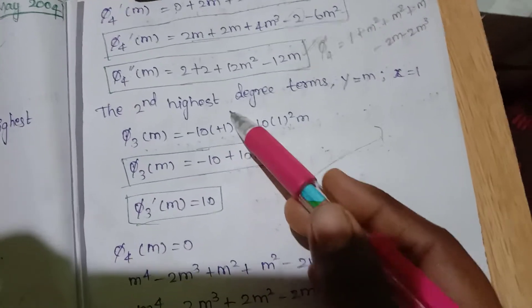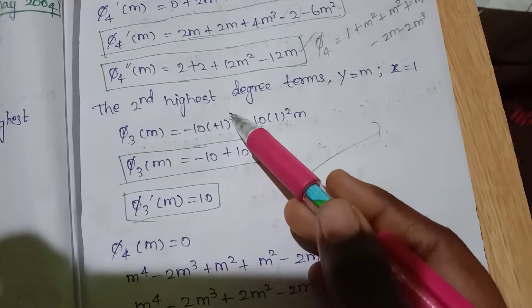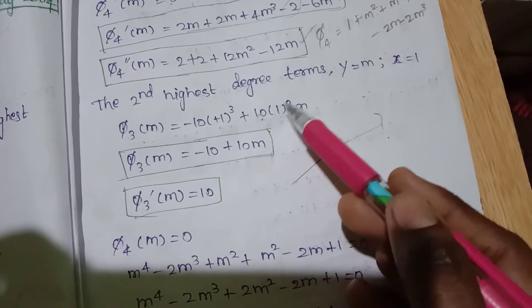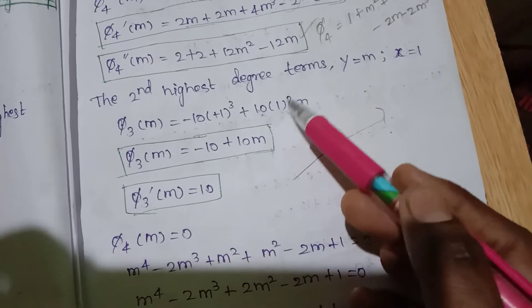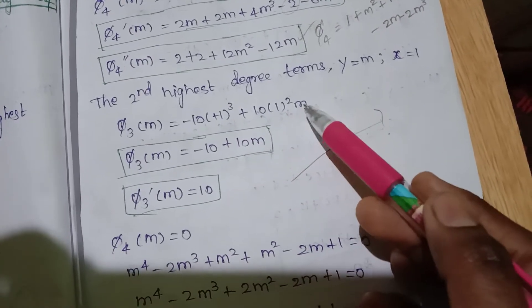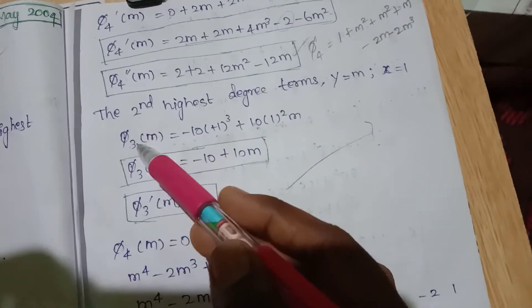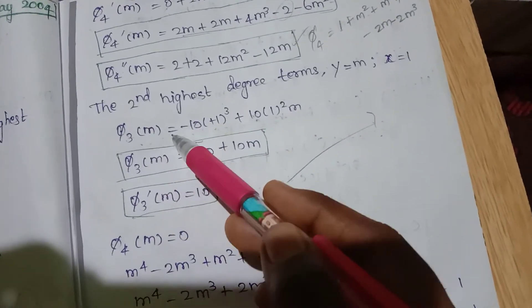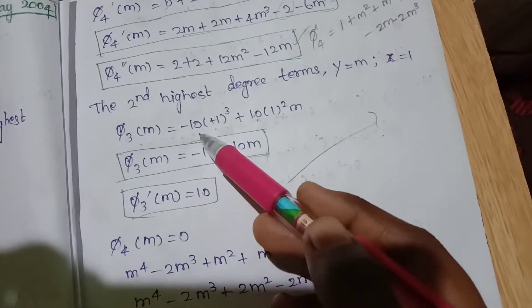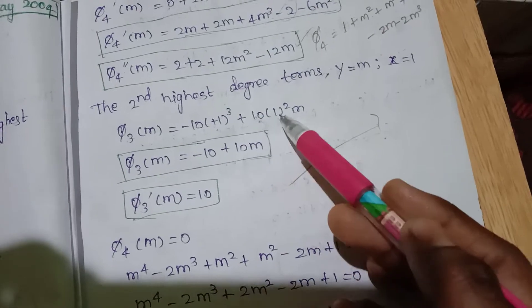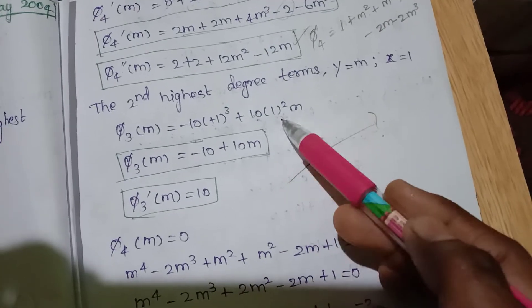x cubed is 1 cubed, x squared is 1 squared, y is m. So φ₃(m) is equal to minus 10 times 1 cubed plus 10m.